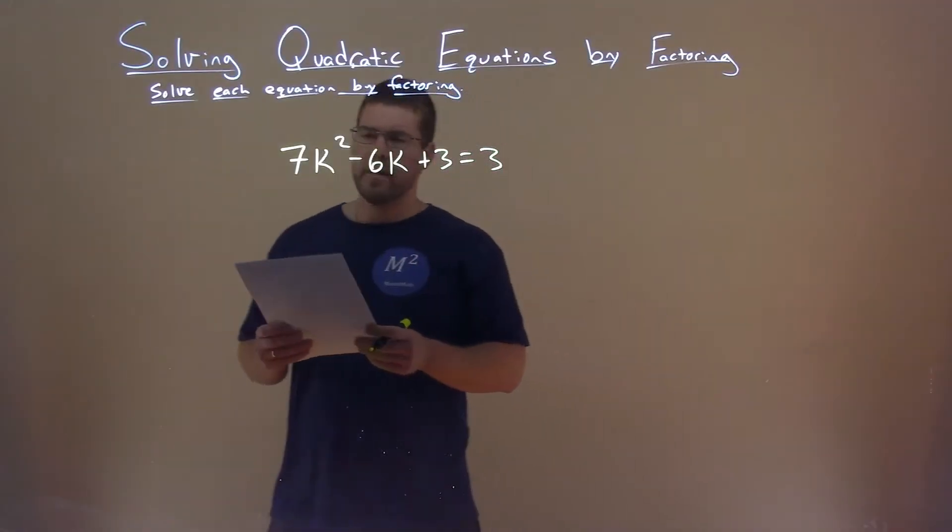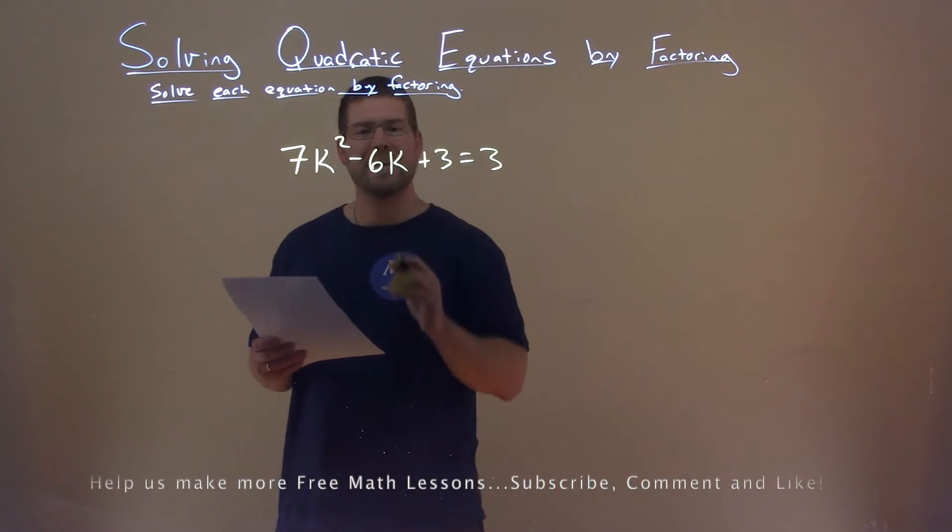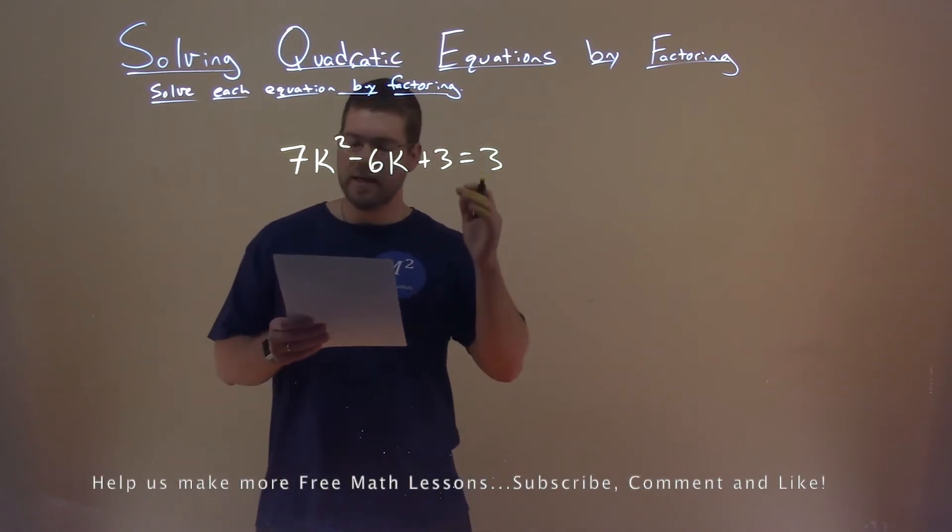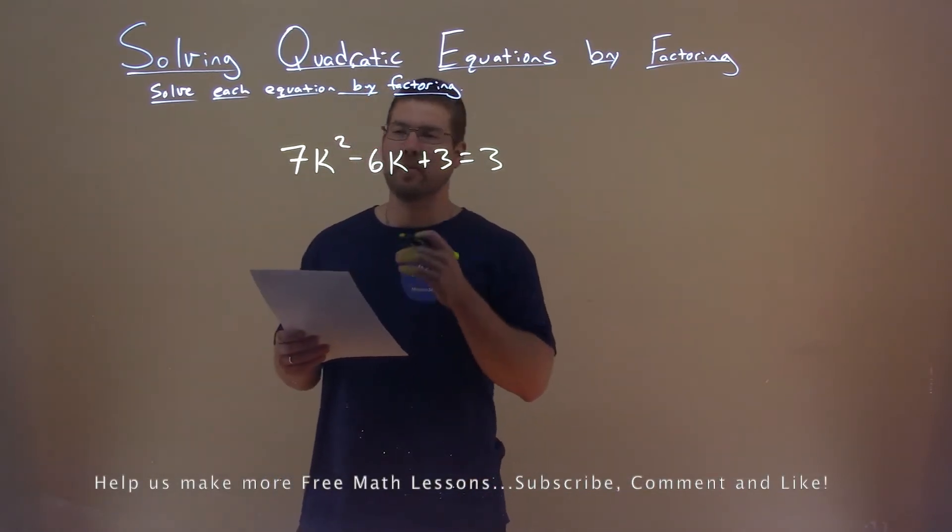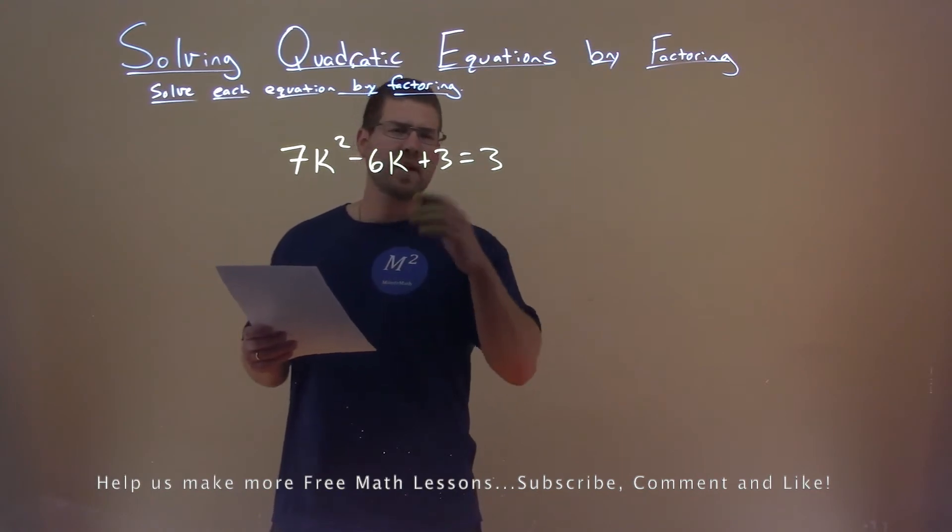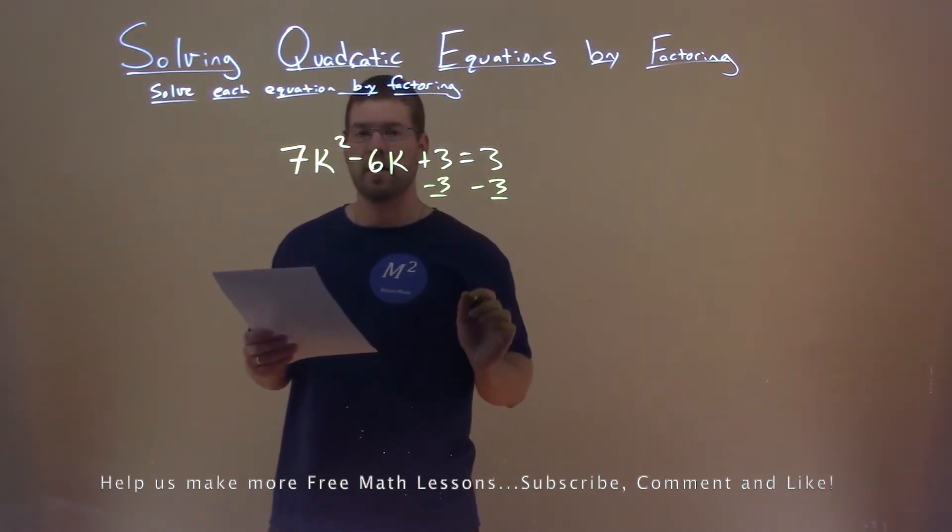We're given this problem right here, 7k squared minus 6k plus 3 equals 3, and we want to solve this by factoring. Let's get this equal to 0, so let's subtract 3 to both sides.